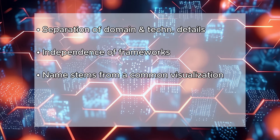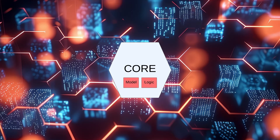The hexagonal architecture aims to establish a structure where the business or domain code remains independent and separate from technical implementation details such as frameworks and databases. The name hexagonal stems from a common visualization of application components resembling a hexagonal cell. At the core of the hexagon lies the domain core, housing the domain model and business logic implementation. It is written in plain old Java and should not rely on any dependencies to frameworks like Spring, Hibernate, or Feign.